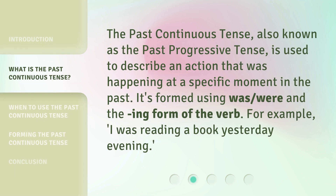The Past Continuous Tense, also known as the Past Progressive Tense, is used to describe an action that was happening at a specific moment in the past. It's formed using was, were, and the ing form of the verb. For example: I was reading a book yesterday evening.